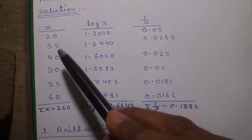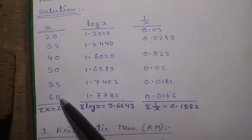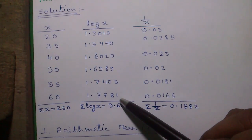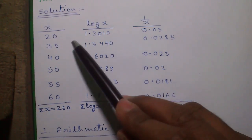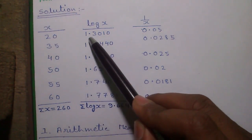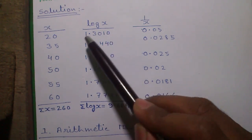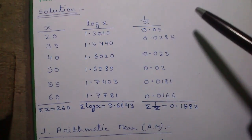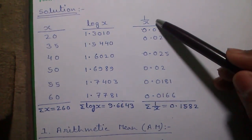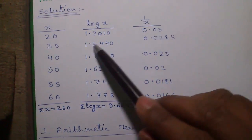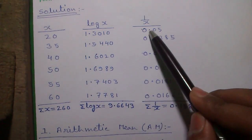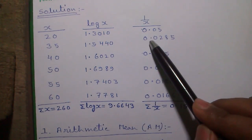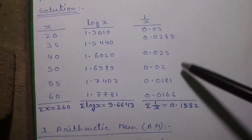So first we write our original values or x values in the first column. In the second column we will write the corresponding log value of that number. Log 20 is 1.3010, log 35 is 1.5440. Similarly, in the third column we will write 1 divided by that number. So 1 divided by 20 equals 0.05, 1 divided by 35 equals 0.0285, and so on.